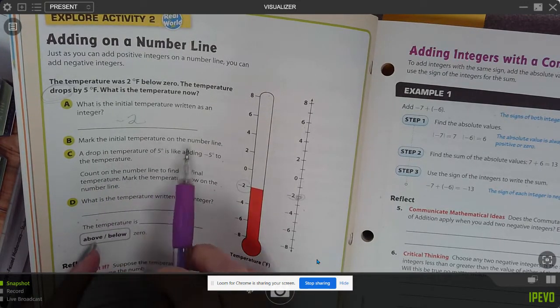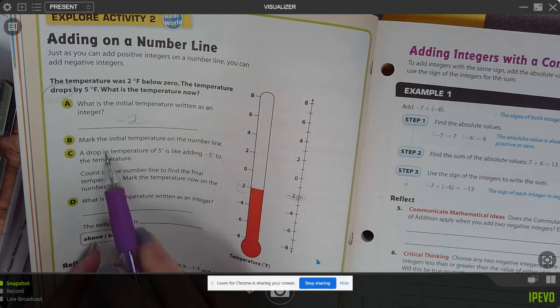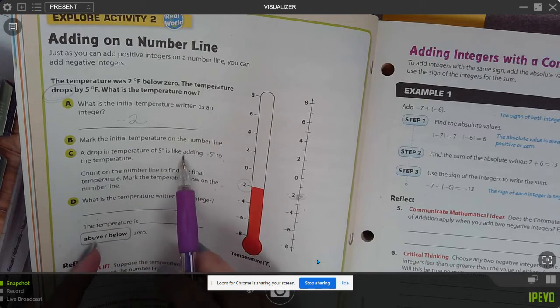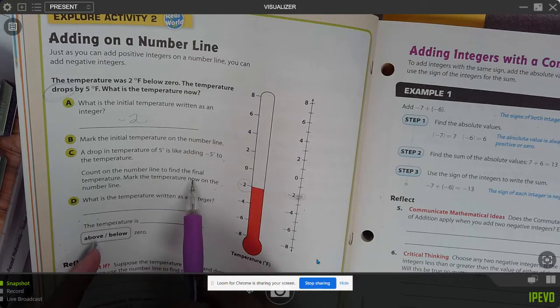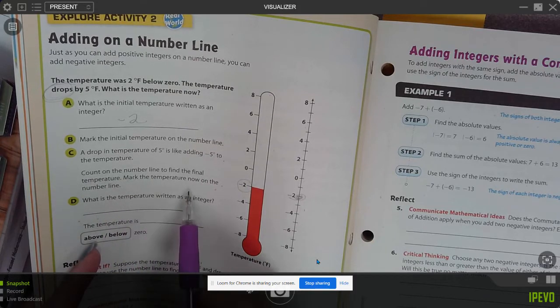It would be written as negative two. Mark the initial temperature on the number line. So I did that. A drop in temperature of five is like adding negative five to the temperature. Count on the number line to find the final temperature. Mark the temperature now on the number line.